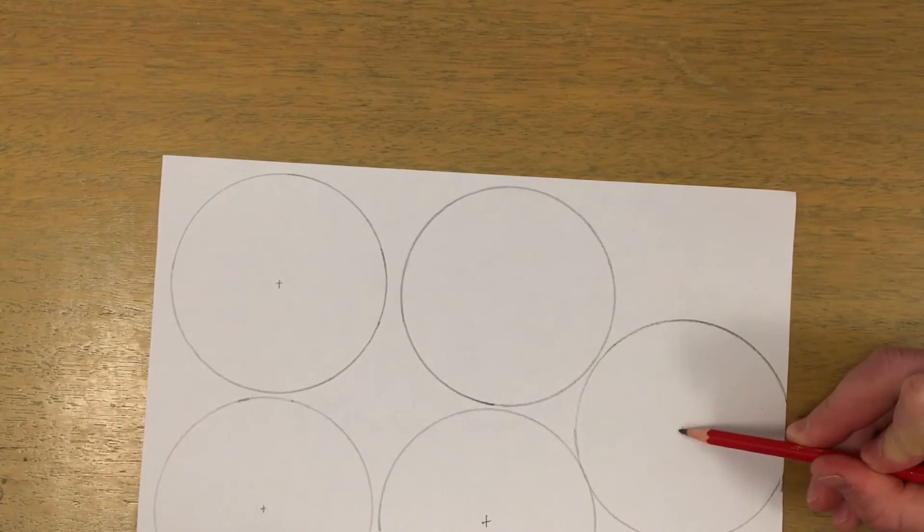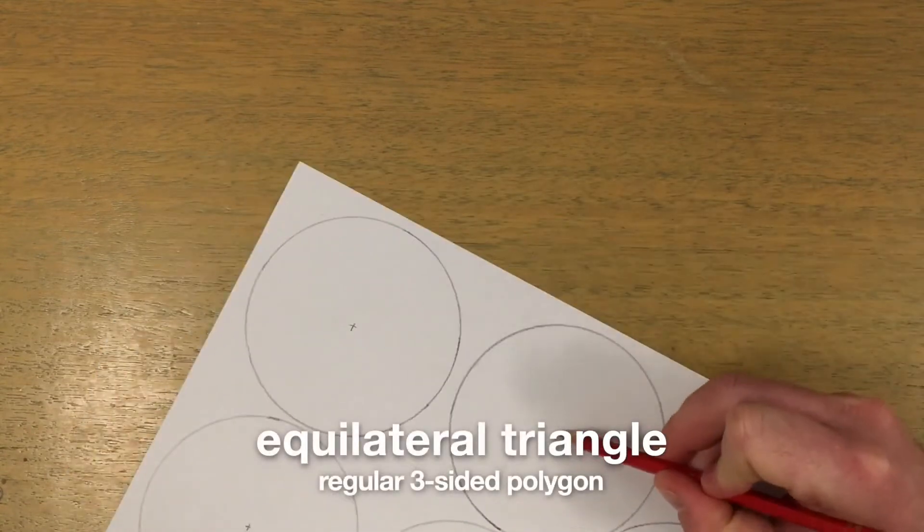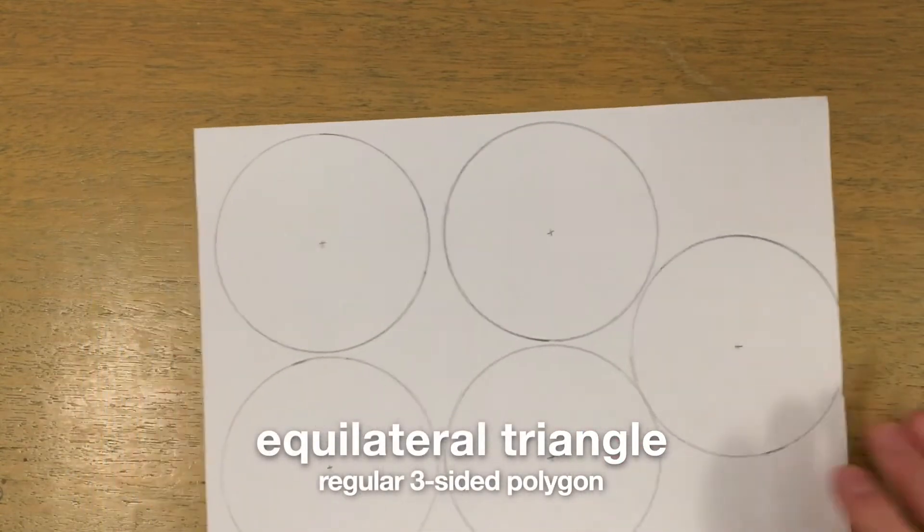We are going to try tessellating regular three-sided polygons, also called equilateral triangles.